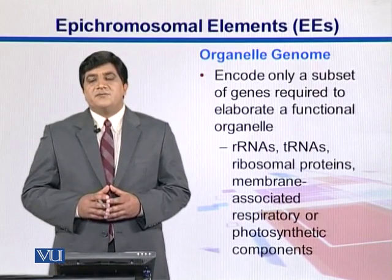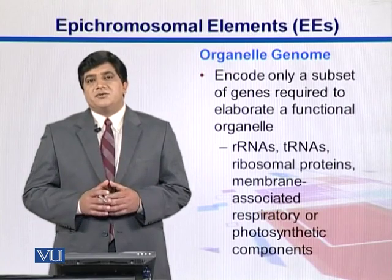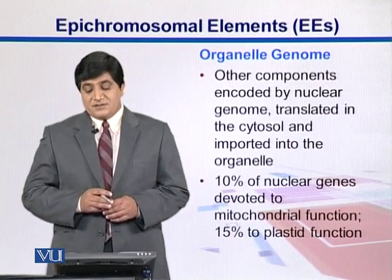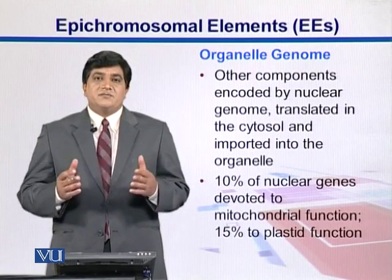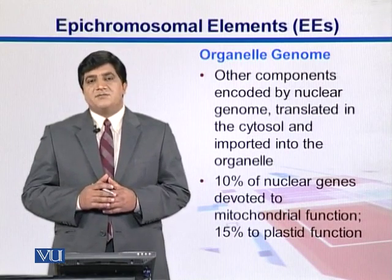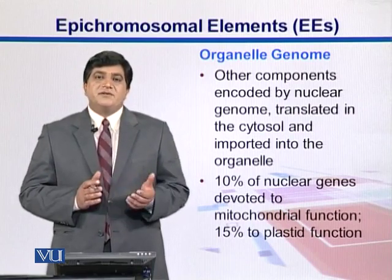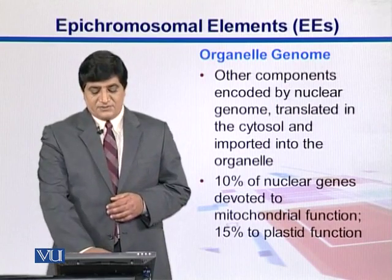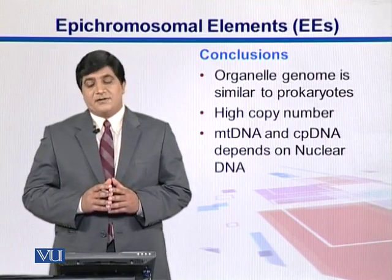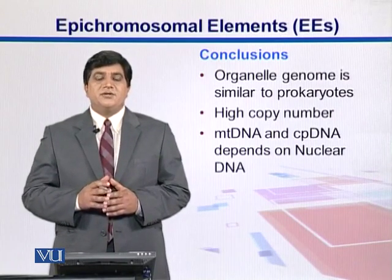As far as the expression of genes present on these organelles is concerned, it has been observed that their functions are dependent on the nuclear genome — they cannot carry out their full functions by themselves. Nuclear genomes encode some important products which are then transported through the cytosol to these organelles. It has been observed that about 10% of the nuclear genome helps mitochondria and 15% helps chloroplast for its functions. In conclusion, organelles are similar to prokaryotes, exist in high copy number, and both mtDNA and cpDNA depend upon the nuclear genome for their functions.